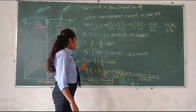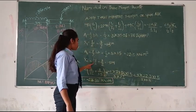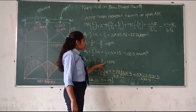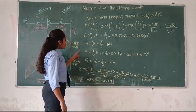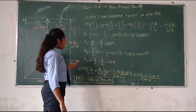Now we calculate X2 bar. X2 bar is L2 by 2 and the answer is 1.5m.